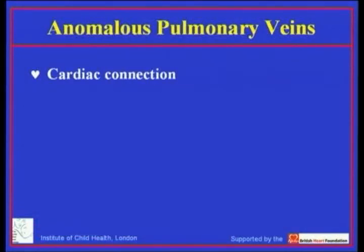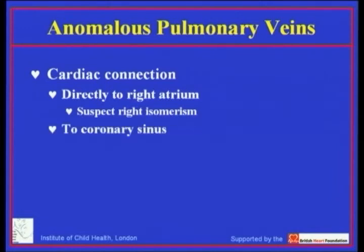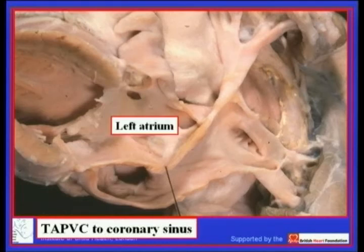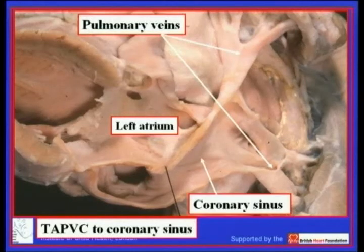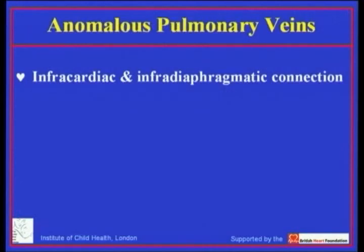Right atrial appendage isomerism is particularly important in the setting of cardiac connection: in my experience, whenever pulmonary veins connect directly to the right atrium, the appendages have been isomeric and of right type — so right isomerism should always be suspected in this situation. We must also distinguish connection to the coronary sinus, which is almost certainly the commoner form of cardiac pulmonary venous connection. Viewed from behind, we see the pulmonary veins draining into the coronary sinus rather than the left atrium, which then drains through an enlarged orifice to the right atrium.